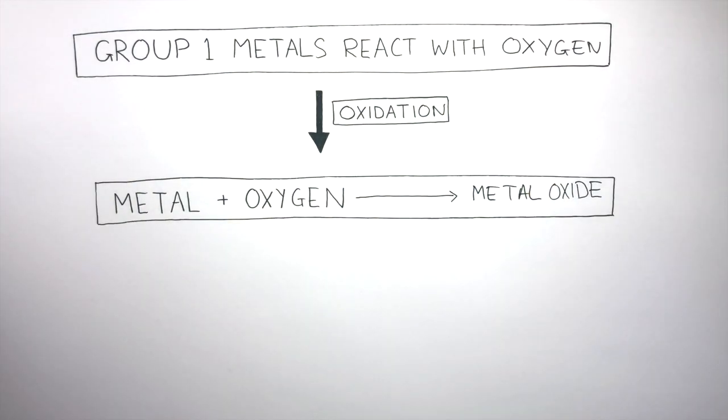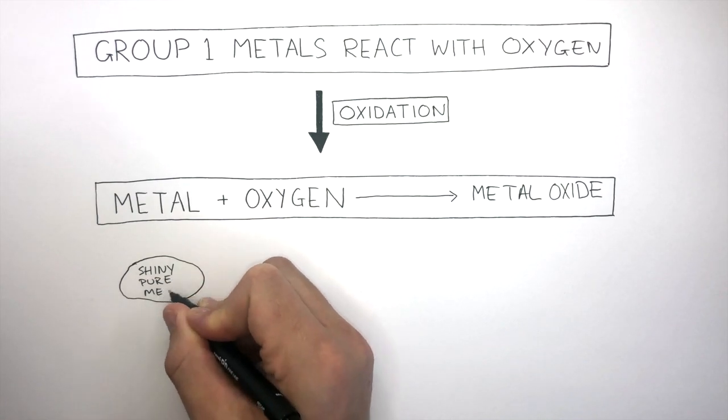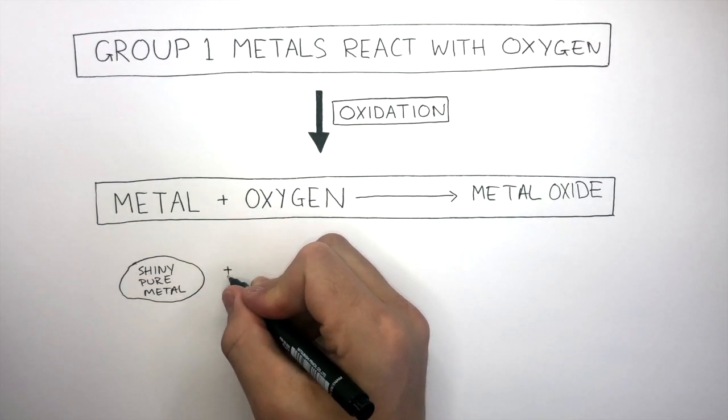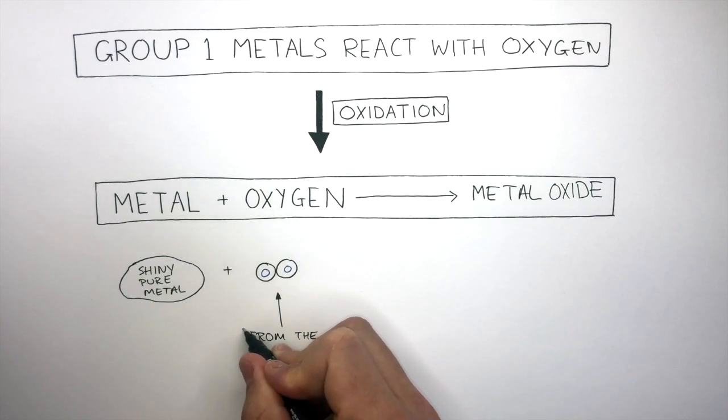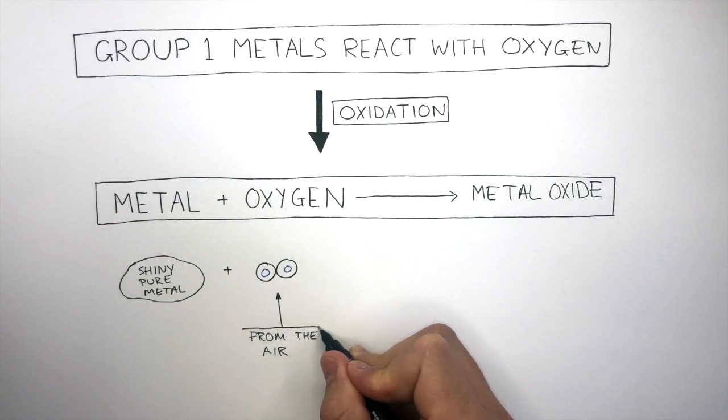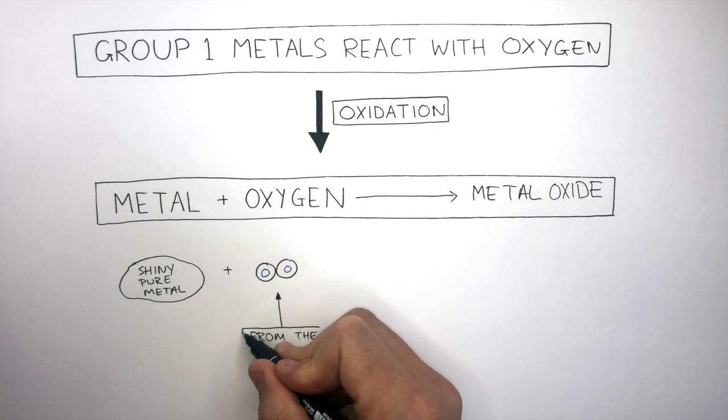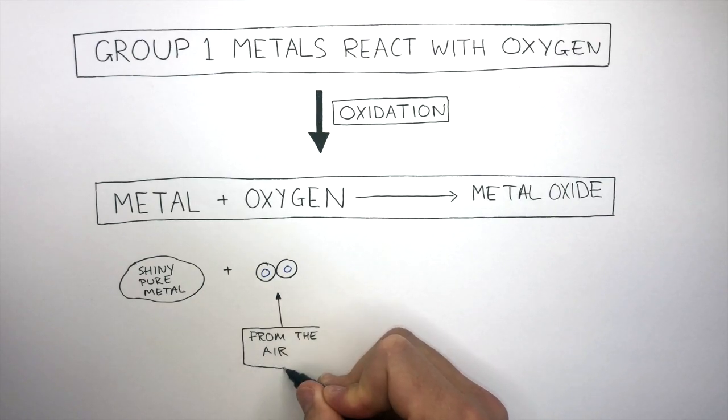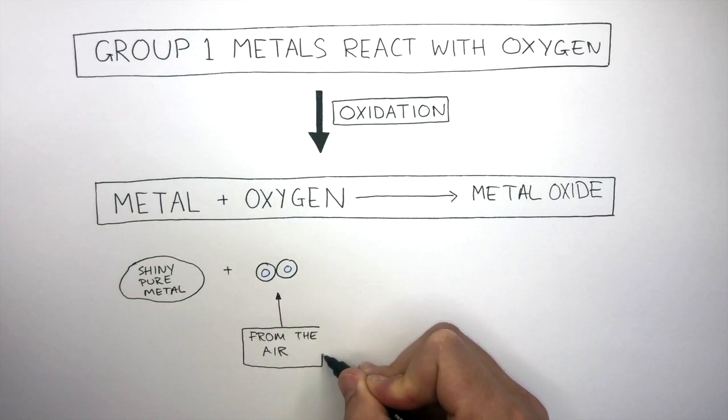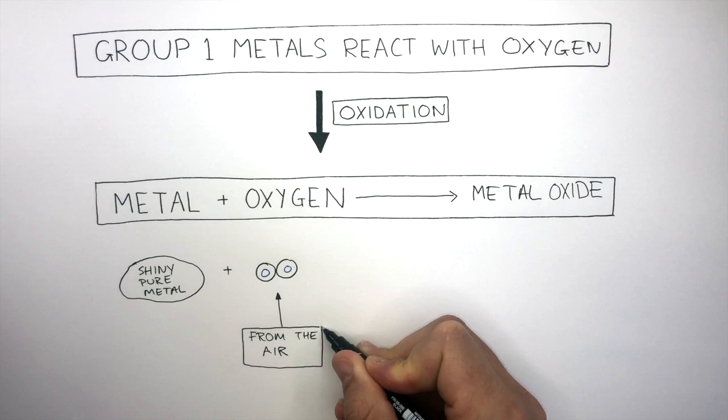Group 1 metals are very reactive, so they react very quickly in oxygen. Alkali metals are shiny pure metals and they will react with oxygen molecules from the air. In an exam question, if it ever says a substance reacts with the air, what it means is it is reacting with oxygen, which is from the air.